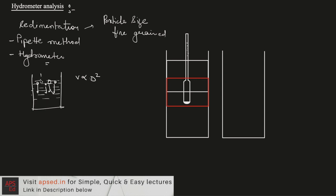In the pipette method, we take a sample from a constant depth after time t1, t2, t3. We dry this sample, find out the weight of the particles, and then divide it by the weight of the particles in the original suspension. That way we find out the percentage finer.